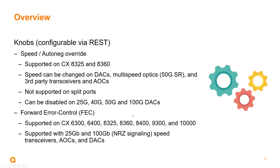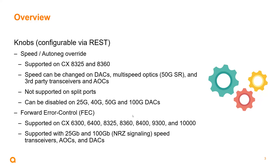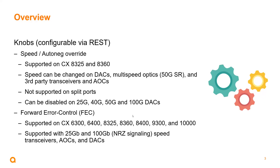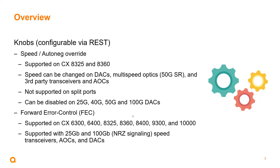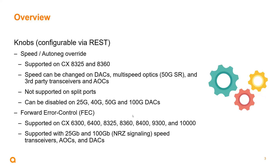When we're talking about speed and auto negotiation overrides, these are supported on the CX8325 and the 8360. The speed can be changed on DACs, multi-speed optics, and third-party transceivers and AOCs. However, it's not supported on split ports, and it can be disabled on 25 gig, 40 gig, 50 gig, and 100 gig DACs.